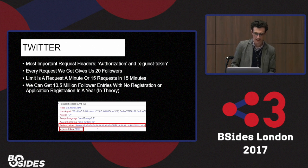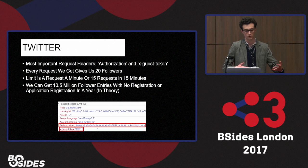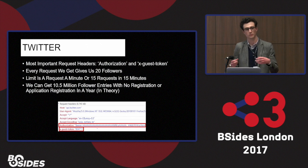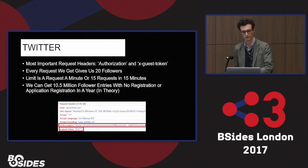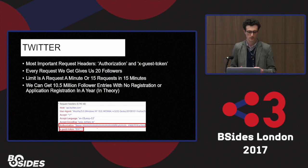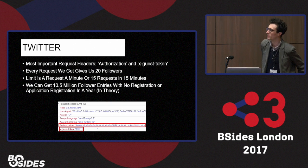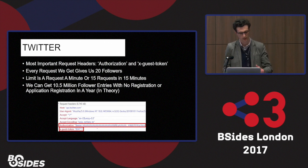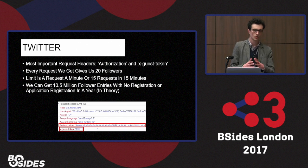Essentially every request where you ask for followers, you'll get 20 followers. You get a rate limit within the API — 15 requests in 15 minutes, so that's every minute essentially. This is the same if you register an application. I calculated that you could get 10.5 million follower entries without any registration and without an API key using just one IP — or even more with multiple IPs.